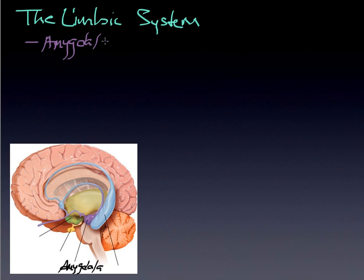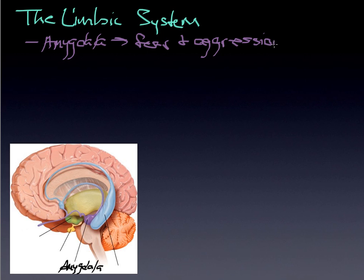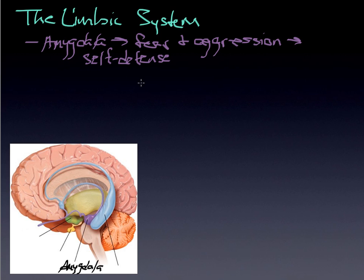The amygdala has to do with fear and aggression. You might ask why those particular emotions — the reality is that when I'm afraid, the next possible thing I have to consider is self-defense, which is also part of aggression. The amygdala is directly connected to fear and aggression. If you remove the amygdala, what you have is a fairly calm, non-responsive animal — even to things that might threaten its safety.